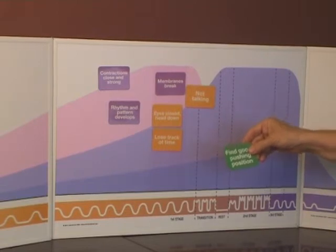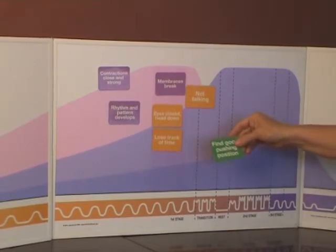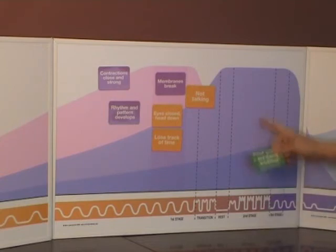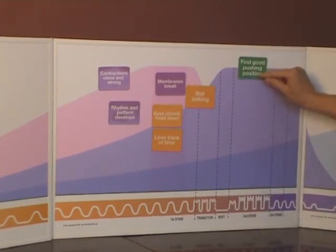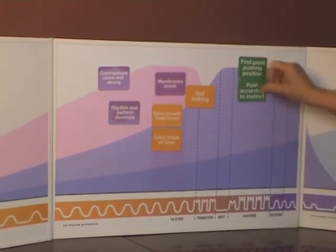The green ones look at ways you can help yourself in labour. So here we would be in the second stage, so find a good pushing position. Push according to instinct.